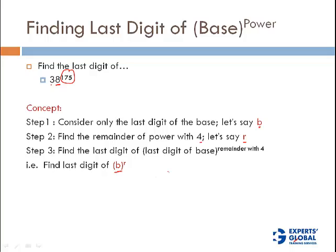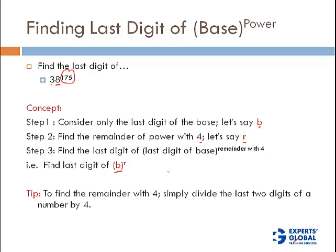It's a very simple approach. Since this is a tryout video I am not getting into why this works, but it will help you solve all questions of this type on the GMAT. A small tip: to find the remainder with 4, simply divide the last two digits of the number by 4. You don't have to divide the entire number — just the last two digits.